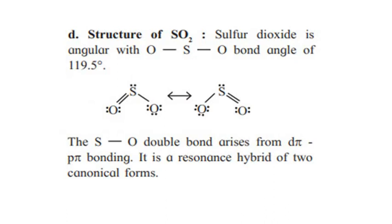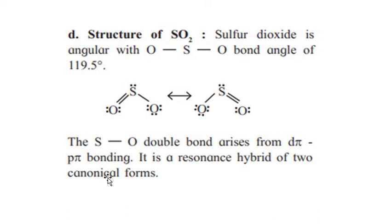Structure of sulfur dioxide: SO2 is angular, with an S–O bond angle of 119.5°. The S=O double bond arises from dπ–pπ bonding. SO2 is a resonance hybrid of two canonical forms.